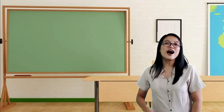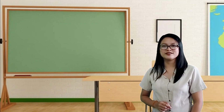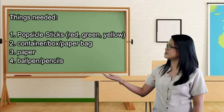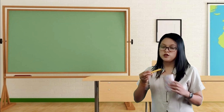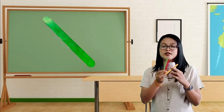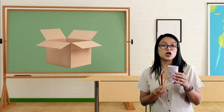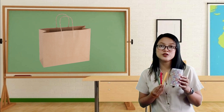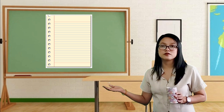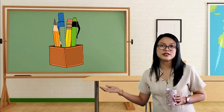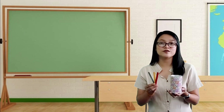Let's start! I need you to help me do one experiment, and these are the things needed. We have popsicle sticks in red, green, and yellow colors. A container, or a box, or a paper box will do. Another thing is a green sheet of paper, together with your ball pens and pencils.